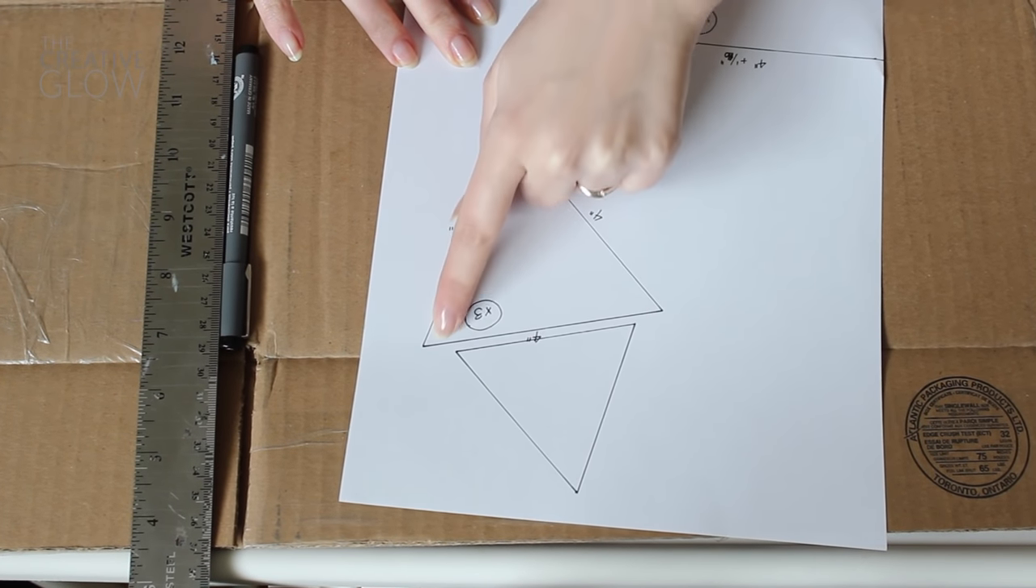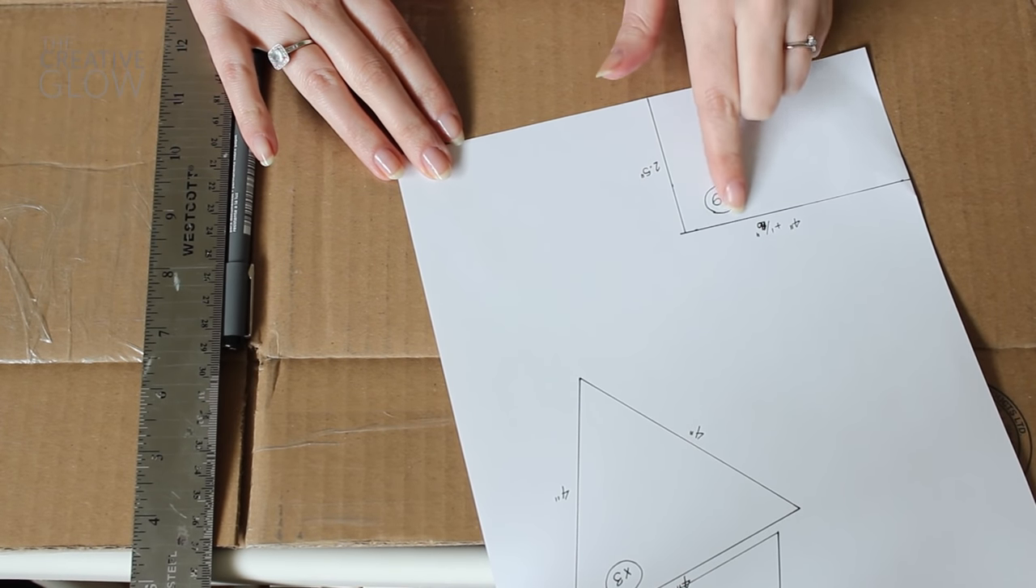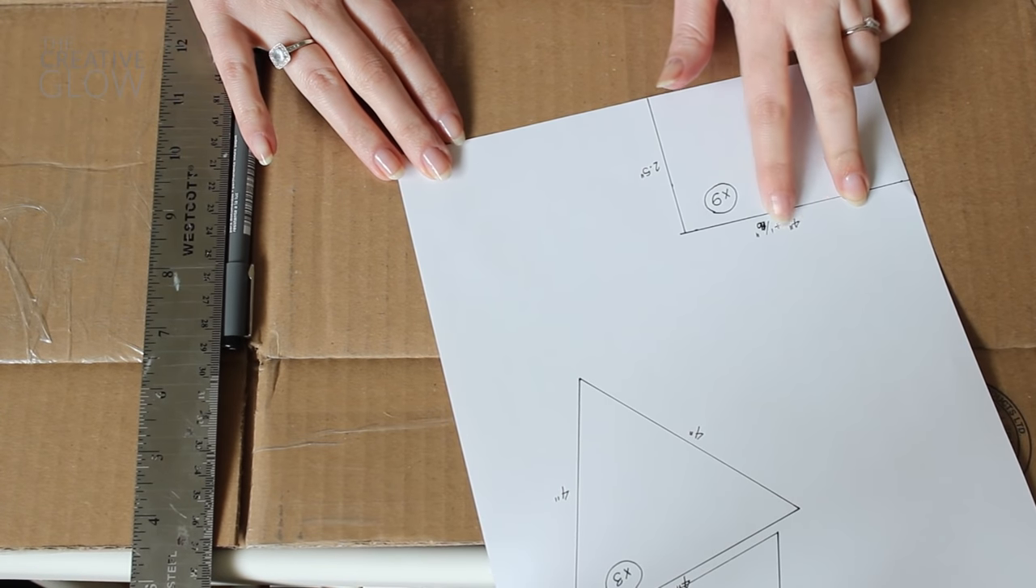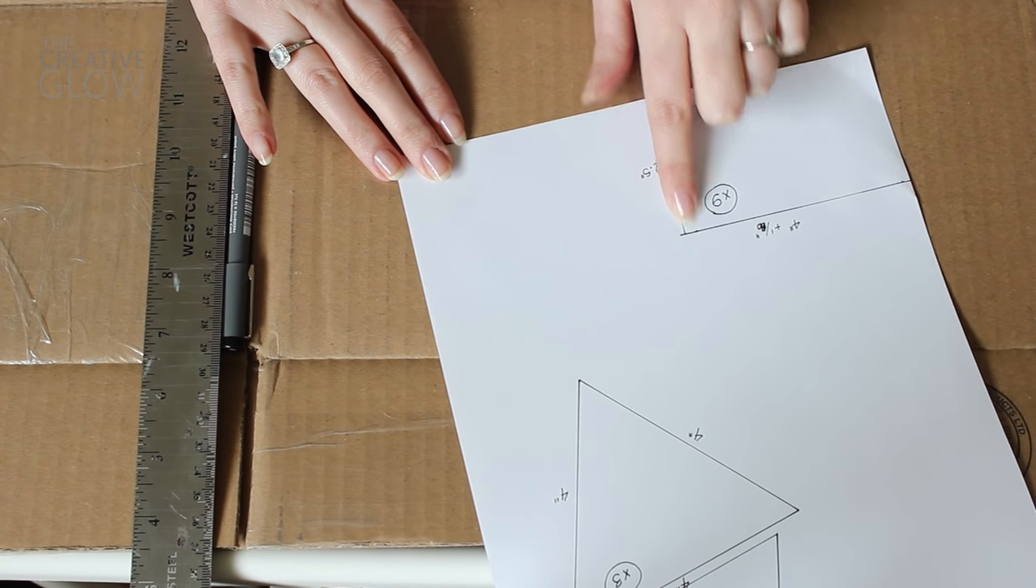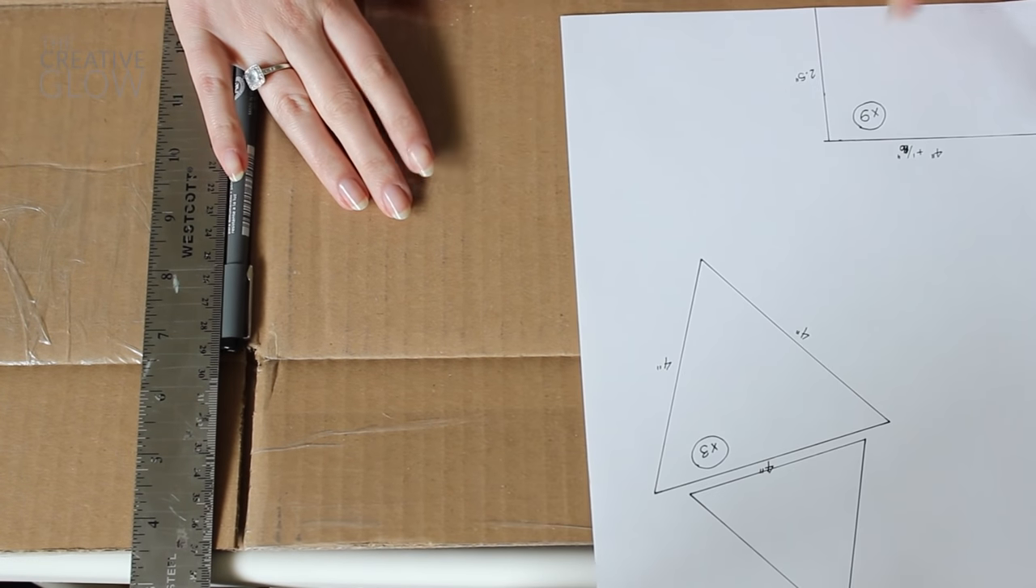So you're going to do an equilateral triangle which means all sides are the same length and all sides are four inches each. So we're going to do three of those if you want to make three of these candle holders. And then for each candle you're going to need three of these rectangular shaped pieces. So if you're doing three candles you're going to need nine of these which are two and a half inches by four and one sixteenth inches.